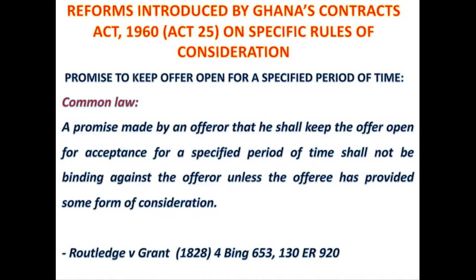If you haven't given me anything that will bind me for the six-month period, under the common law that promise will not be binding on the offeror. The offeror can sell the house to a different person in the second month, and the first offeree cannot do anything about it. This is the common law rule: a promise made by an offeror that he shall keep an offer open for acceptance for a specified period of time shall not be binding unless the offeree has provided some form of consideration.